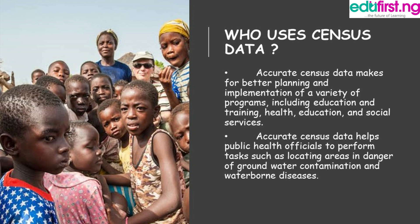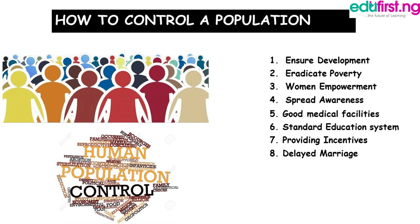So, how do you control a population? There are many ways of controlling population, but we'll highlight eight points: 1. Ensure development. 2. Eradicate poverty. 3. Women empowerment. 4. Spread awareness. 5. Good medical facilities. 6. Standard education system. 7. Providing incentives. 8. Delayed marriage. These are the eight ways of controlling a population.